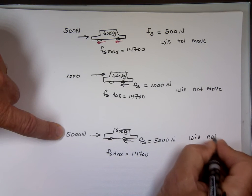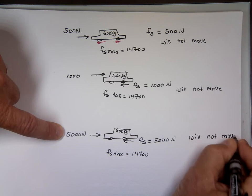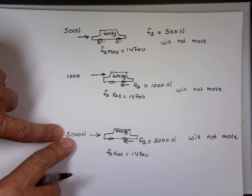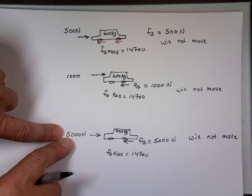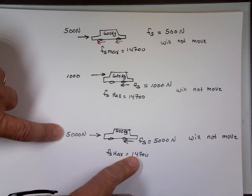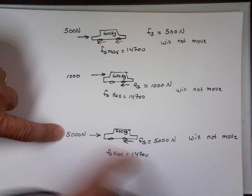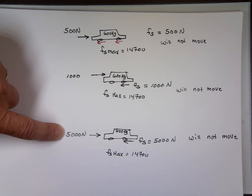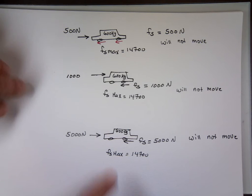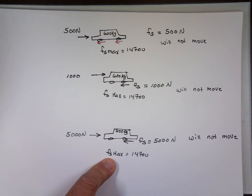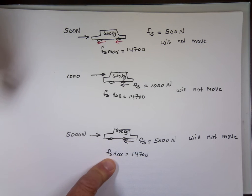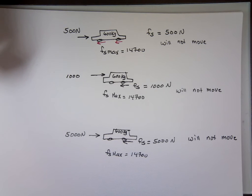When is the car going to move? When the pushing force is greater than the maximum static friction - when this force is more than 14,700 N. Once the car starts to move, we can't use static friction anymore because the car is moving. We have to use kinetic friction, not static. And kinetic friction is always less than static friction.